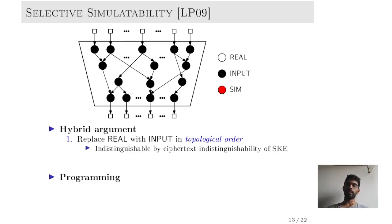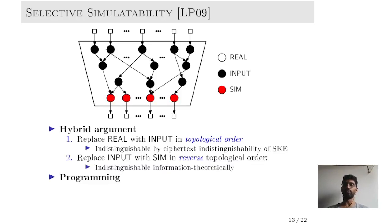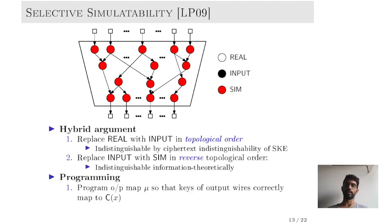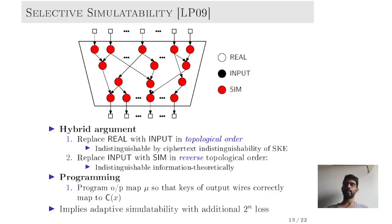We continue switching gates to input dependent mode until we have switched everything, then switch the gates from input dependent to simulated in reverse topological order. This step is information-theoretic, since the keys are used symmetrically. Note that if one uses the default output map, the adversary can trivially distinguish the hybrids via evaluation of the garbled circuit. Therefore, in each hybrid we program the output map so that it maps correctly to the output C of X. This automatically implies adaptive simulatability but with a loss exponential in the input length — one simply guesses the input and applies the selective simulatability reduction.